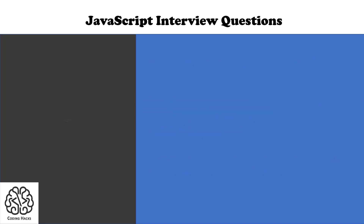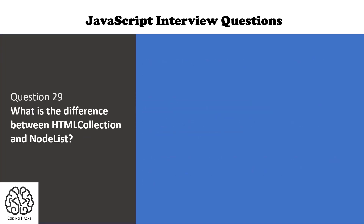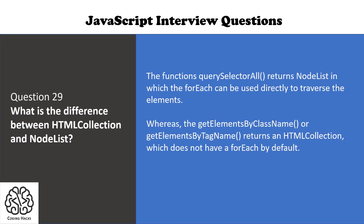The next question is: what is the difference between an HTML collection and a node list? The function querySelectorAll returns a node list, on which forEach can be used directly to traverse elements. Whereas getElementsByClassName or getElementsByTagName returns an HTML collection, which does not have forEach by default.